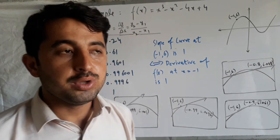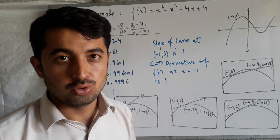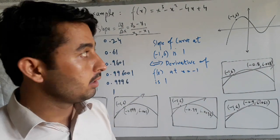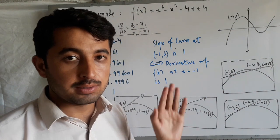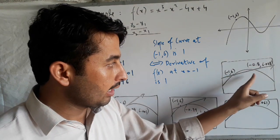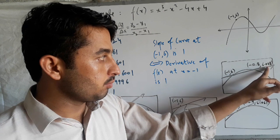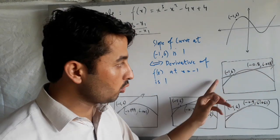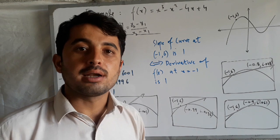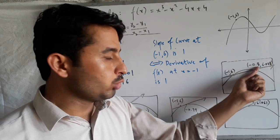Now for example, if our function f(x) is equal to x³ − x² − 4x + 4, and this is its graph. Agar hum ek point (−1, 6) par is curve ki slope find karna chahte hain, to hum ek doosra point lenge — (−0.8, 6.048) — yeh ek doosra point hai. Phir us se ek line pass karenge; is line ko jo do points se pass hua hai, ise hum secant line kehte hain. Yahan x1, y1 aur x2, y2 hain.